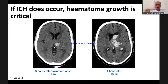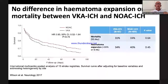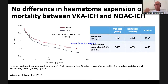NOACs have a lower rate of brain bleeding. But if a brain bleed does occur, mortality is as high as with warfarin-associated intracranial hemorrhage — there is no protective effect. If you have an OAC-associated brain bleed, it makes no difference whether the patient is on warfarin or a NOAC. Mortality is between 30 and 50% depending on risk factors and age.